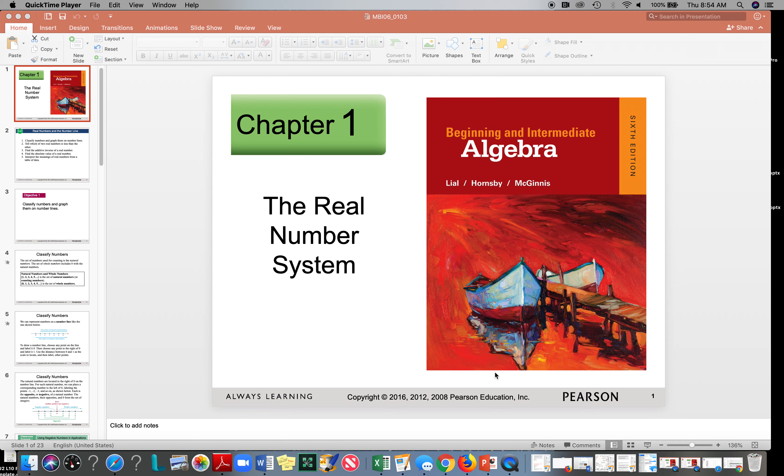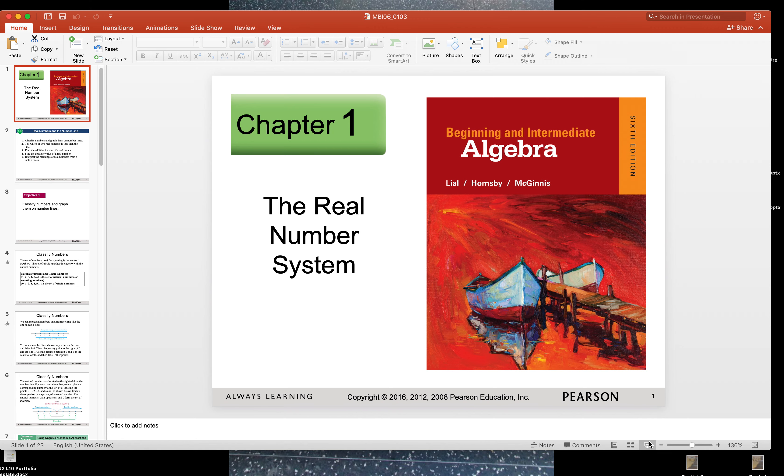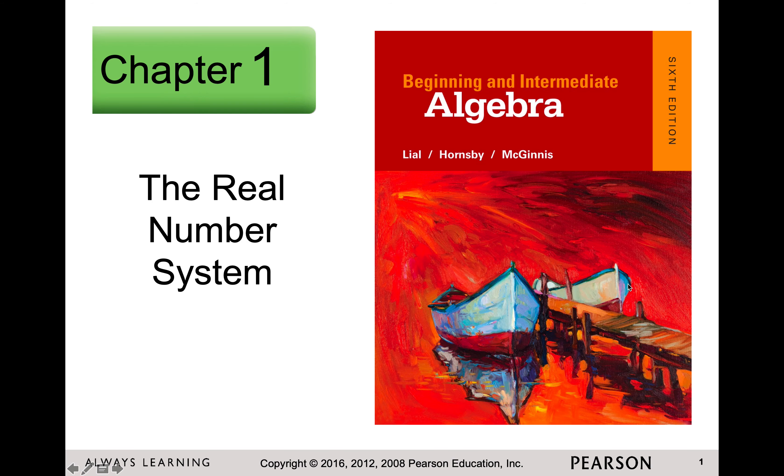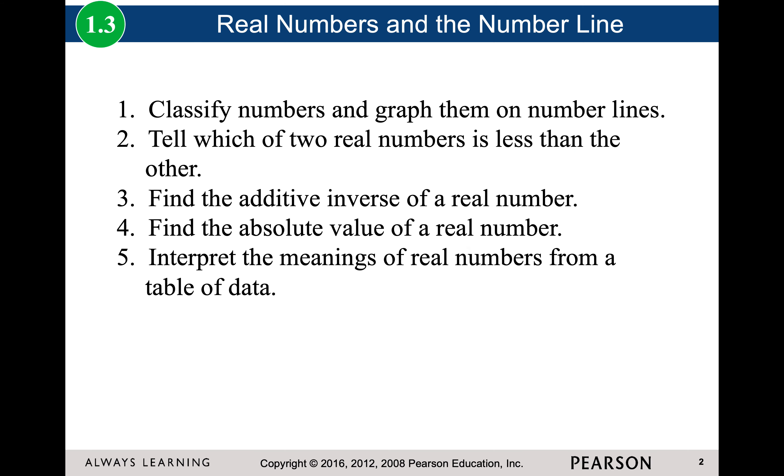In this video we're going to be looking at classifications of numbers. I want you to think back to when you first learned shapes. When we first learned about shapes, there are some classifications of shapes that overlap. So something can belong to two categories of shapes. We're going to have the same thing with numbers. We're going to have overlapping categories of numbers.